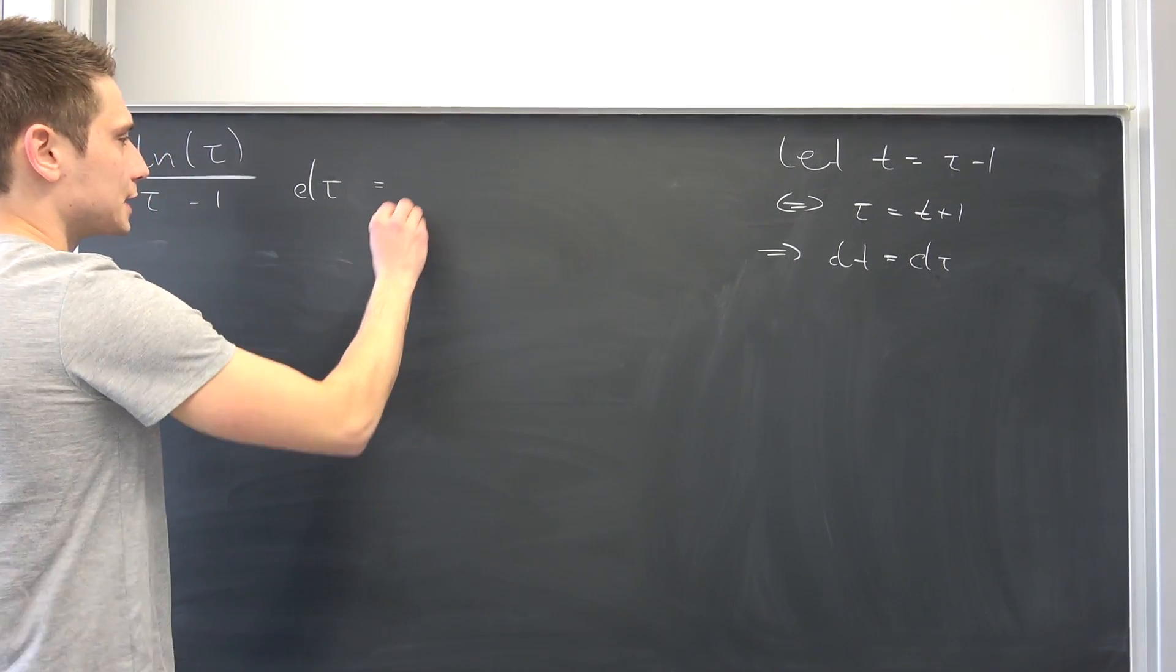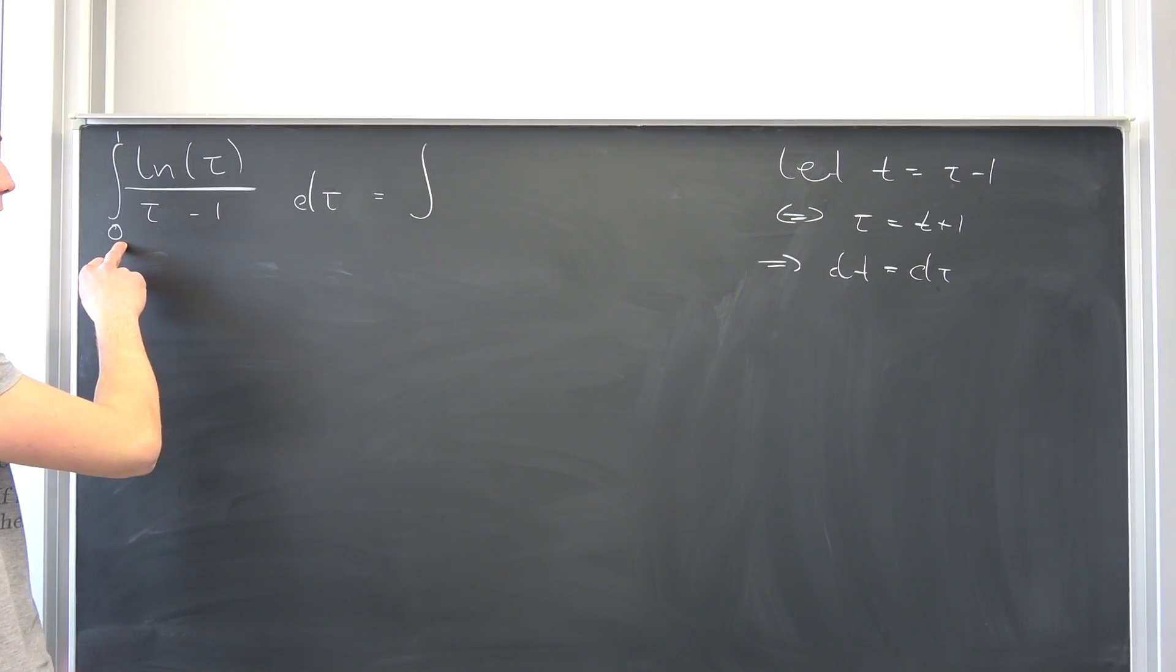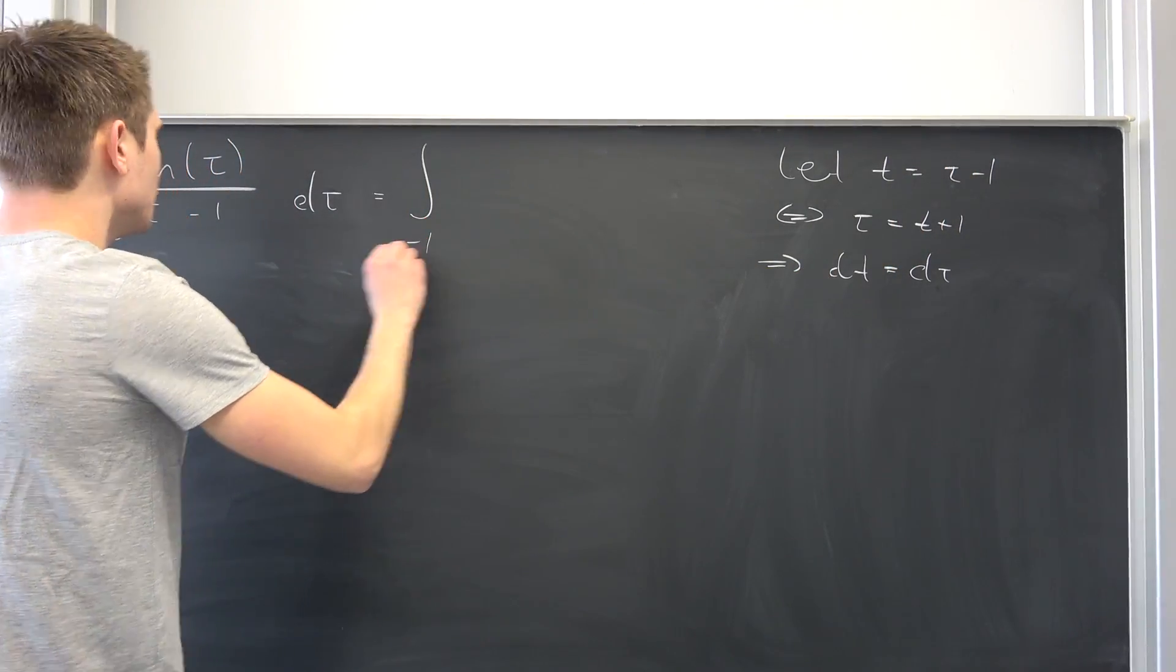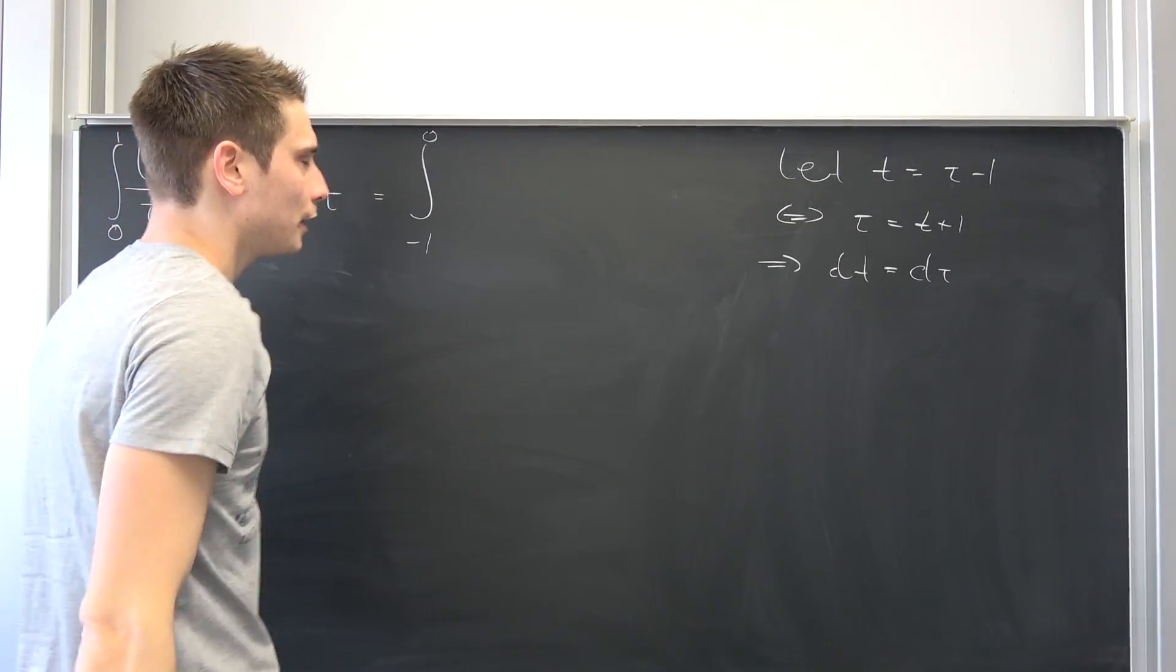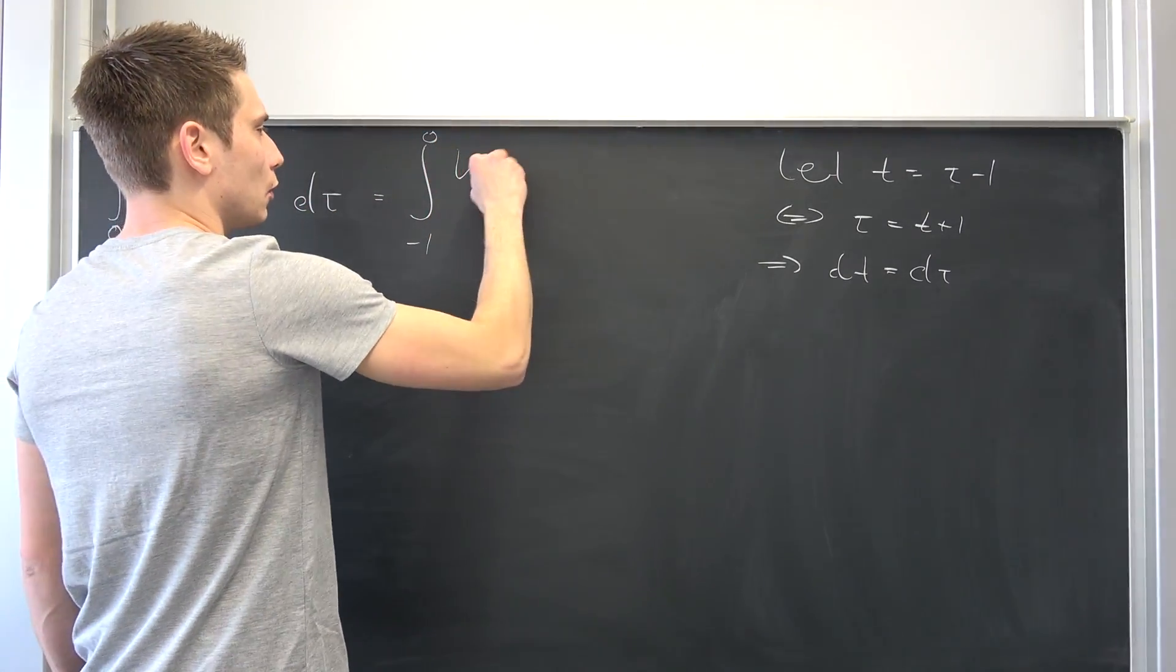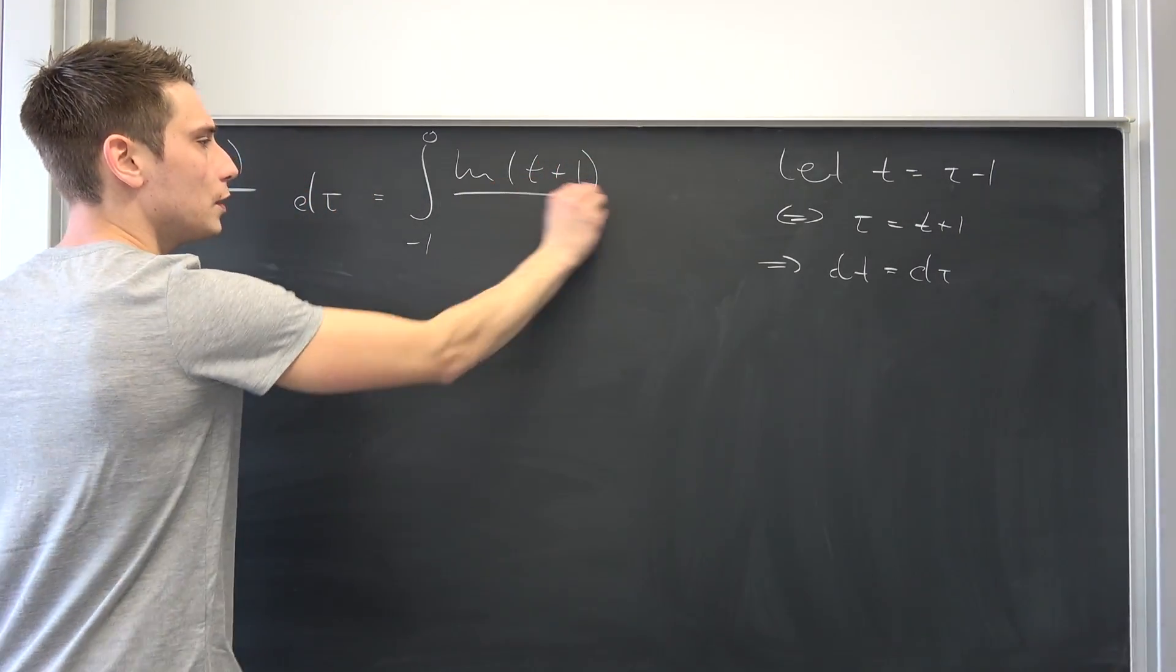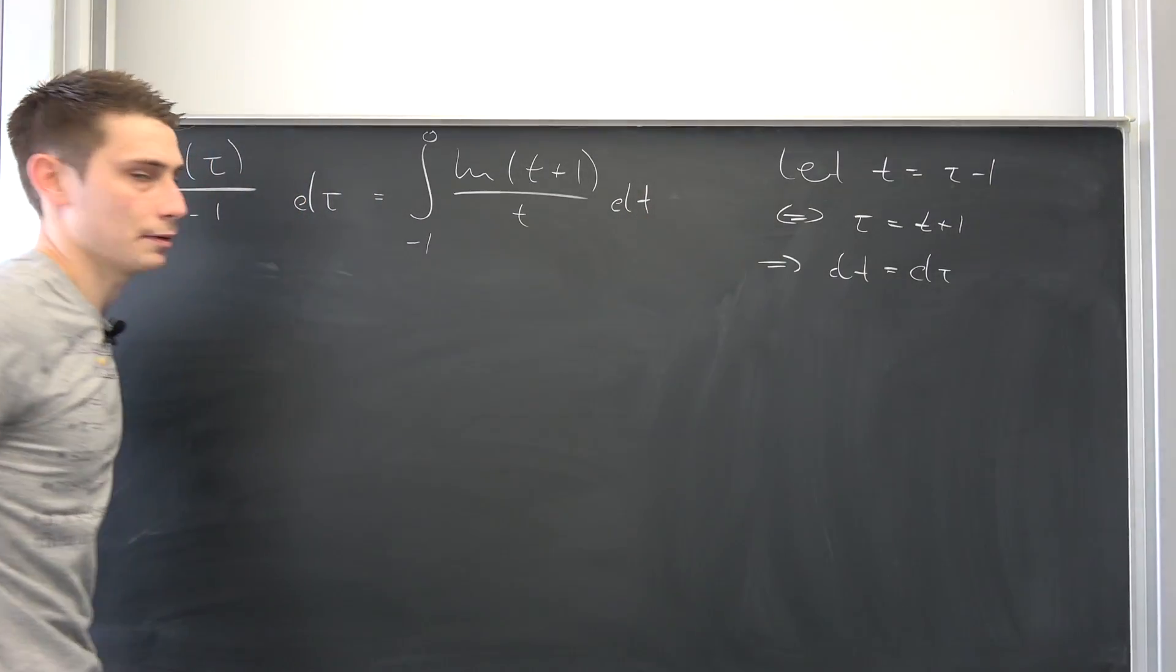So we can rewrite this as an integral running from, we have to change the upper and lower bounds respectively. Meaning if we plug 0 into our tau, you're going to get negative 1. If you plug 1 into our tau, you are going to get 0. Now, we have the natural log of tau, which is nothing but t plus 1, over our substituted variable t, integrated with respect to t.